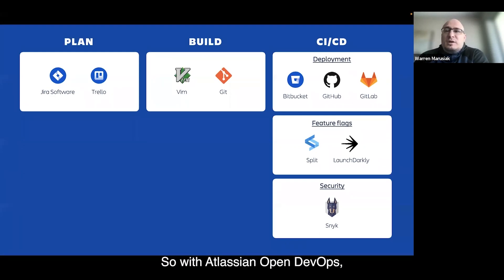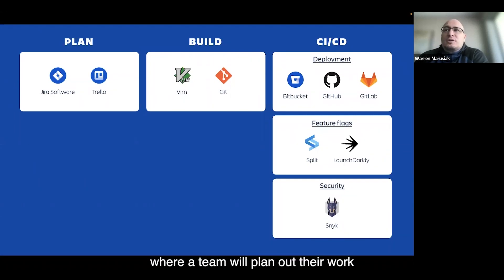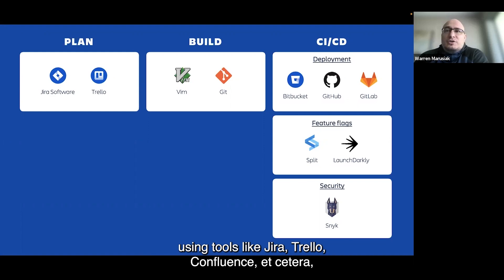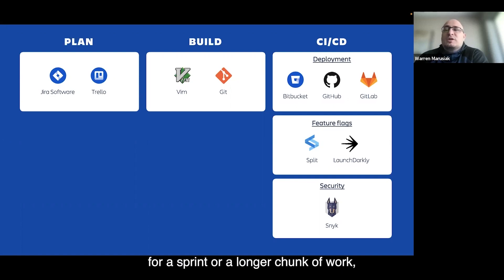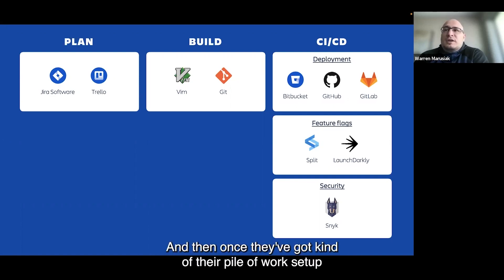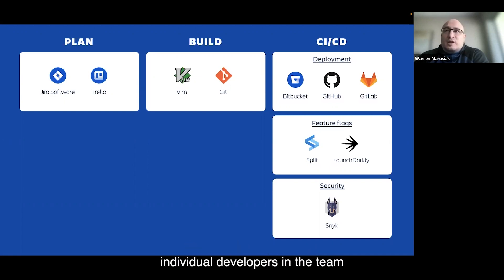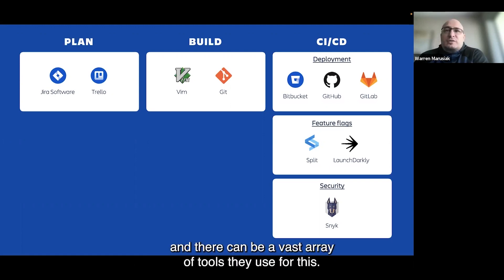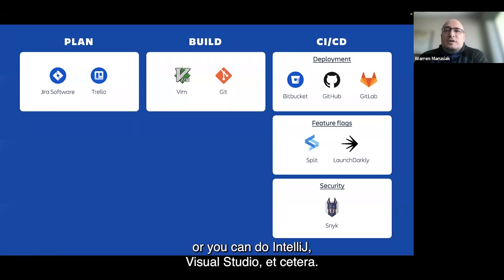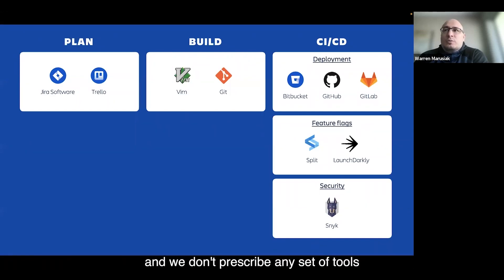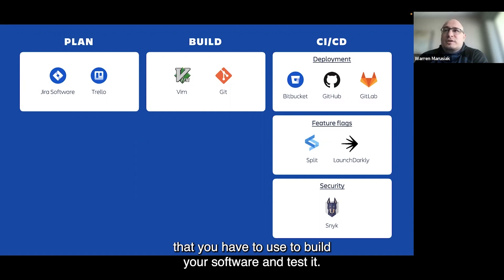With Atlassian Open DevOps, we have this idea of a cycle of work. A team will plan their work using tools like Jira, Trello, Confluence, etc., and build a list of Jira issues to tackle for a sprint or a longer chunk of work. Then individual developers grab those Jira issues and start working. They can use a vast array of tools — something as simple as Vim or Git, or IntelliJ, Visual Studio, etc. We don't prescribe any set of tools you have to use to build and test your software.